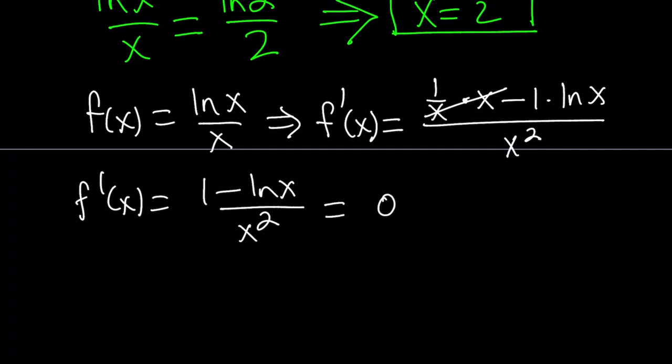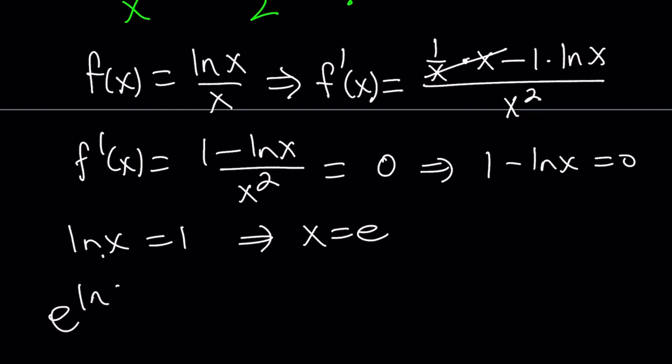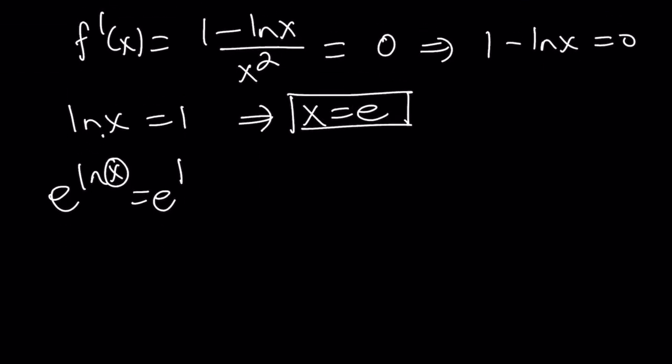Set this equal to 0. Find the critical point. This implies 1 minus ln x equals 0. That implies ln x equals 1. And that implies x equals e. Because our base is e here, you can use the definition or you can do the exponential. e to the ln x equals e to the 1. e to the ln x is x. And x equals e.